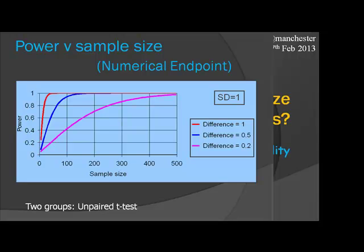Notice how flat these curves become when you're talking about wanting 80 or 90% power. Adding a few here and there doesn't make much difference. You're talking about doubling your sample size — you need to consider big proportionate increases, not adding one or two to your sample, to make any real difference.